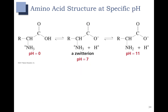Here are some more examples. At a pH of 0, the carboxylic acid and the amine are both protonated. At a pH of 7, the carboxylic acid becomes deprotonated but the ammonium is still protonated — this form is called a zwitterion because it has both a positive and a negative charge. As we increase the pH to 11, the carboxylic acid is still deprotonated and now the ammonium has also been deprotonated, giving us the free amine. The zwitterion form at pH 7 is important because pH 7 is approximately physiological pH — the pH occurring in your body.